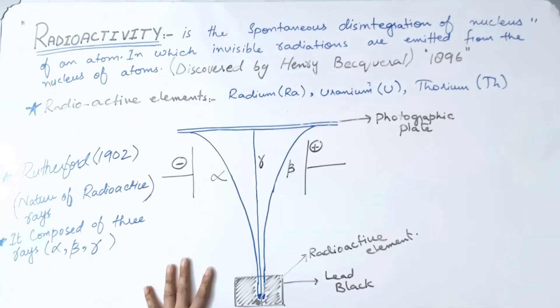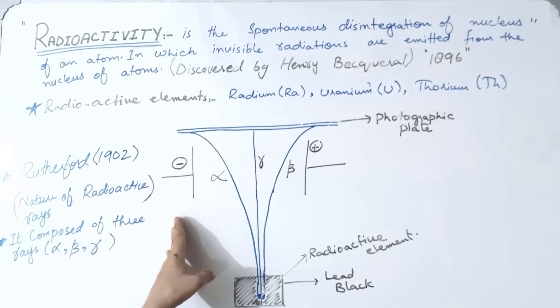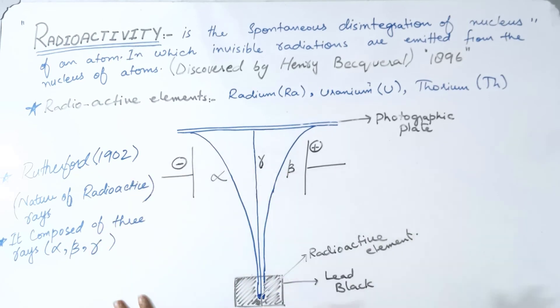Rutherford placed radioactive elements in a lead black box. Opposite to it, he placed a photographic plate on top. Now, when the radioactivity phenomenon started and the rays were emitted, the components started to move.